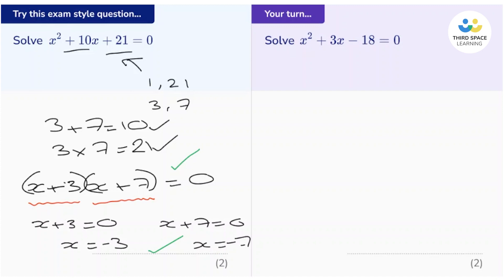Now, let's solve it by factorising. So we need two numbers that add to give this number, plus 3, and multiply to give this number, negative 18.